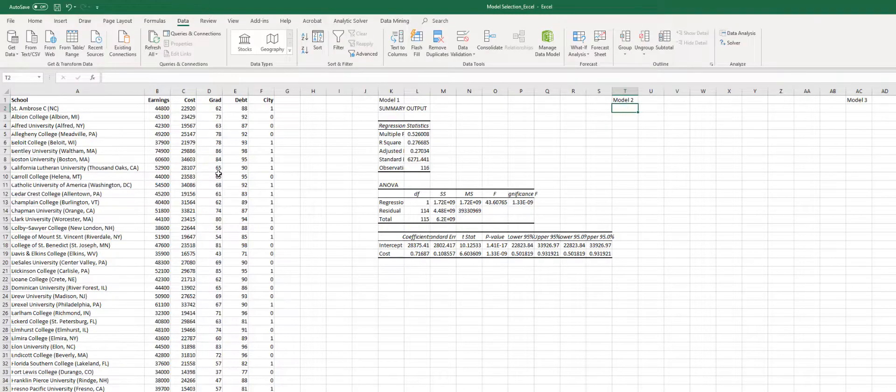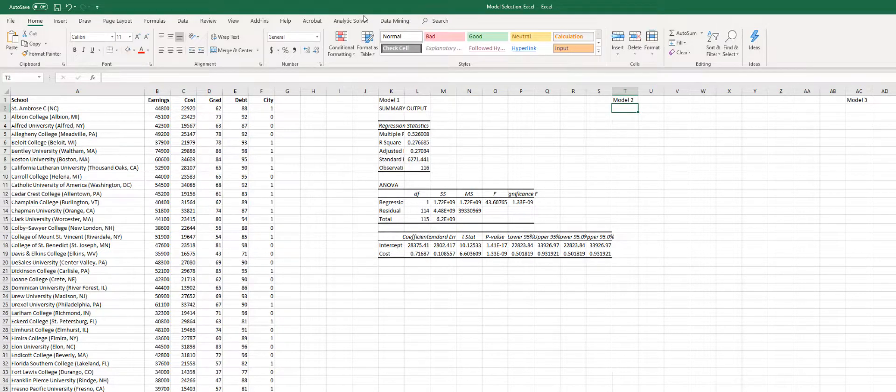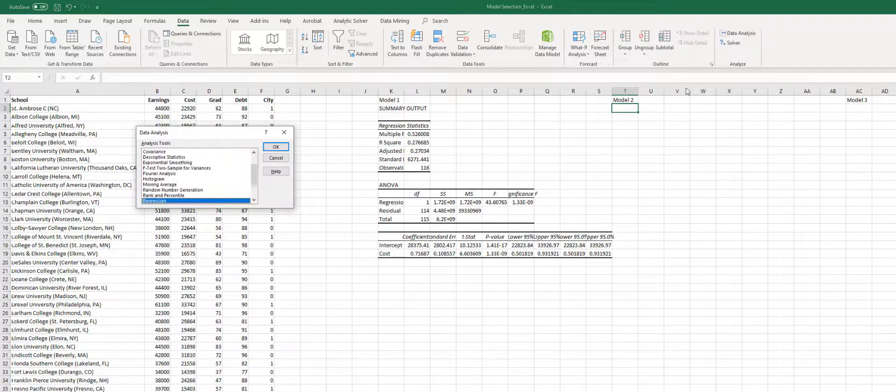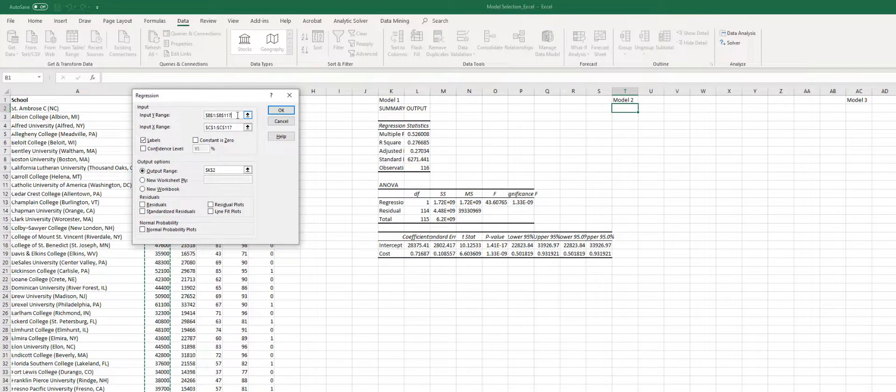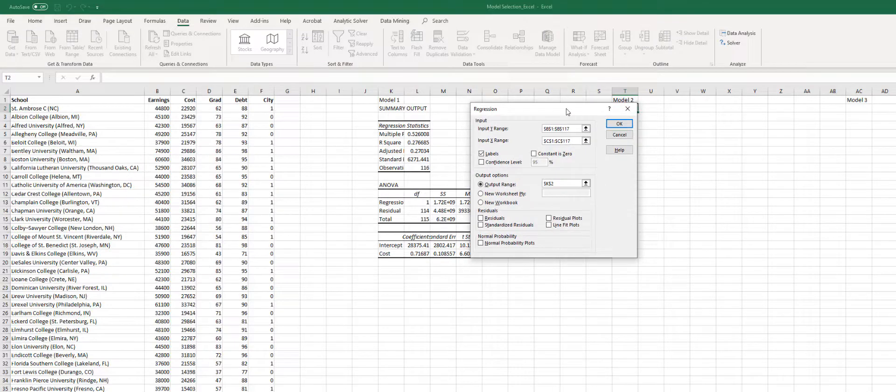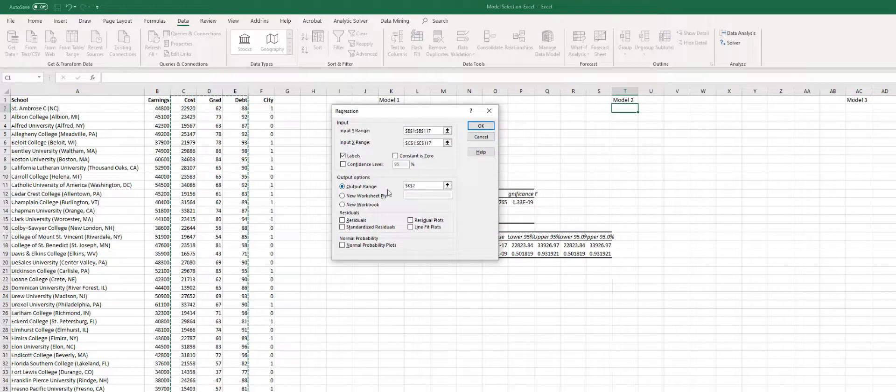And let's do that for model 2. In model 2, we have three predictor variables: cost, grad, and debt. So again, data, data analysis, regression. Our Y input range is correct, but for X, we need to change and include all three predictor variables. And our output range is going to be here, and click OK.